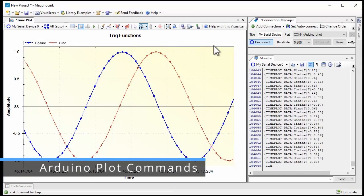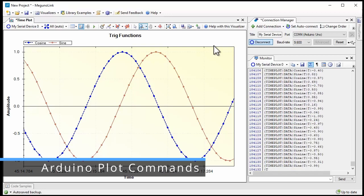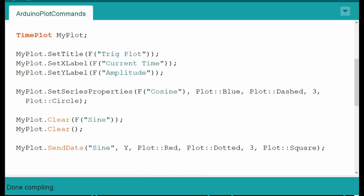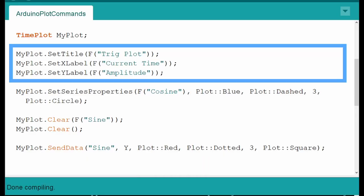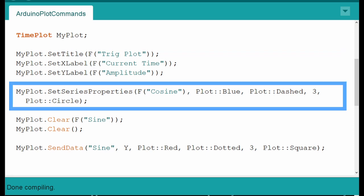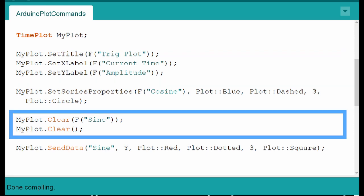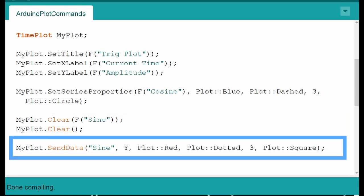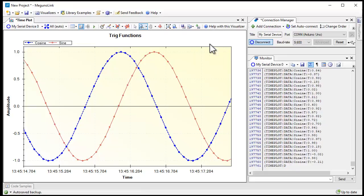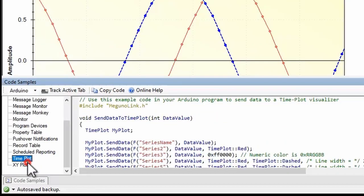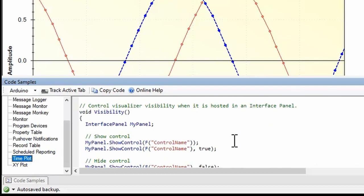Many of the plot properties can also be changed using commands sent from your Arduino sketch. For example, you can set titles, change series properties, and clear one or all the series on a plot. Series styles can even be included with data simply by adding formatting parameters. The code sample panel provides more examples and easy access to our online reference.